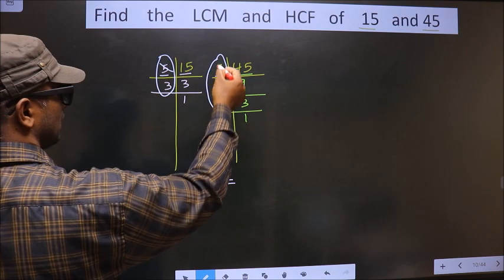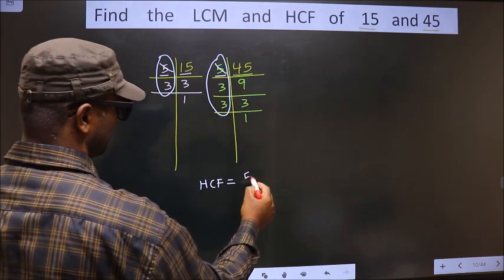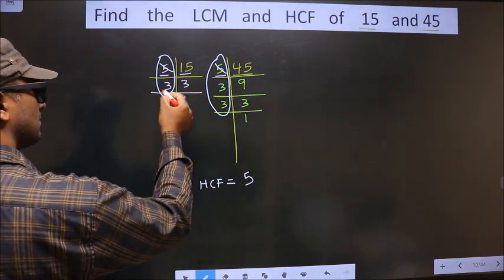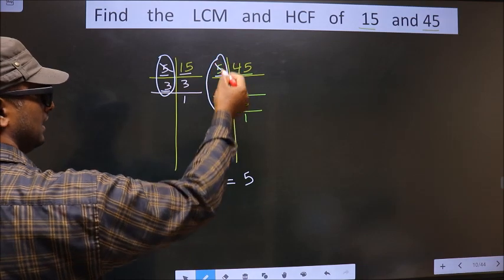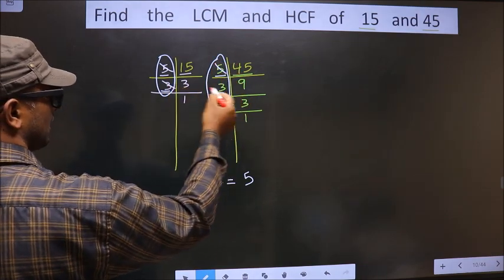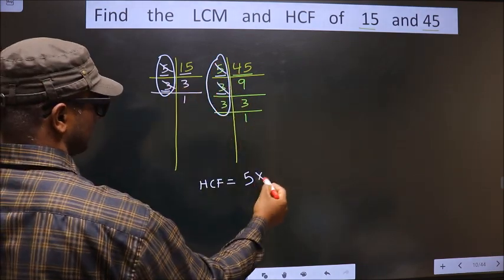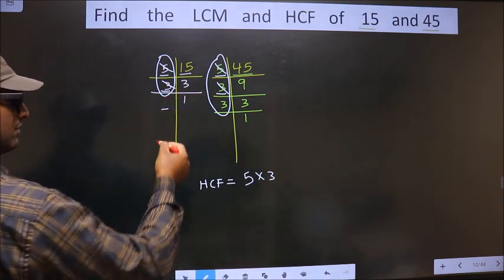Yes, so you cut 5 right here. Now next number is 3. Do we have 3 here? Yes, so you cut 3 right here. No more numbers are left.